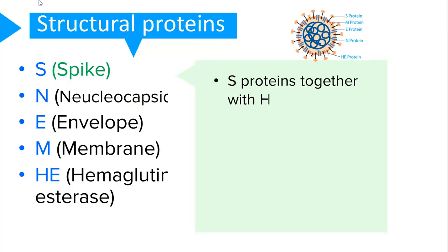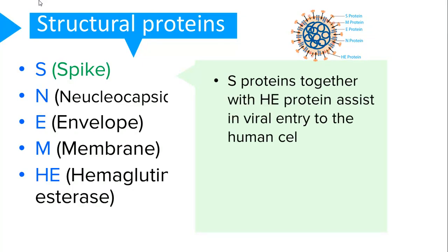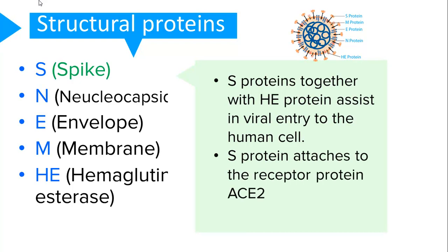Let's start by looking at each protein individually. The spike protein or S protein on the surface assists in viral entry into the human cell together with the HE protein. It does this by attaching to the receptor protein known as angiotensin-converting enzyme 2 or ACE2, which is found in the alveoli in the lungs. This S protein is the one that gives coronaviruses their crown-like appearance, hence the name corona.